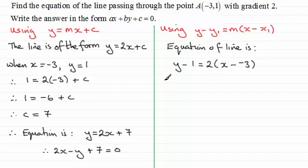And if I expand the bracket out, I've got y minus 1 equals 2x plus 6. And now, if I subtract y from both sides, and add 1 to both sides, I end up with 2x, and then minus y, and then 6 plus another one is plus 7, and it equals 0.